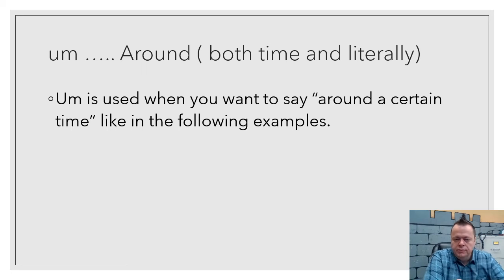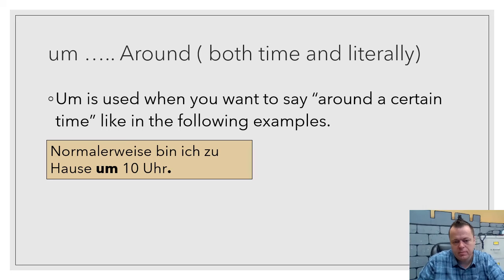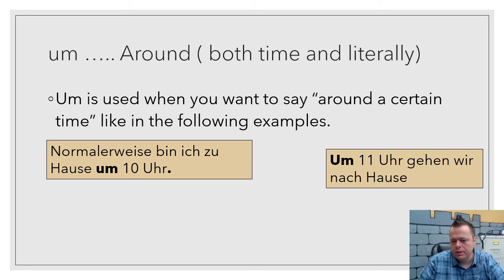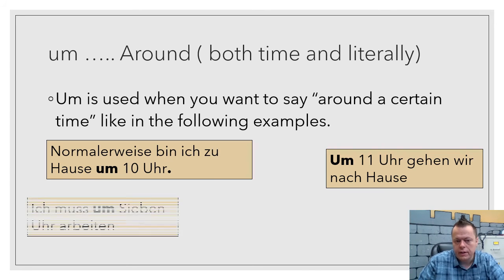You could also use the word um, which means around, both in reference to time and just literally. There's a word that I love: umarmen. Um is around, armen is with your arms, so you put your arms around somebody and you hug them. I love that one. But it's also for time, so around a particular time. If I wanted to express that I was going to be home around 10 o'clock, I would say normalerweise bin ich zu Hause um zehn Uhr. You might also say um elf Uhr gehen wir nach Hause. And again, we're starting our sentence with these words too, and that's allowable.